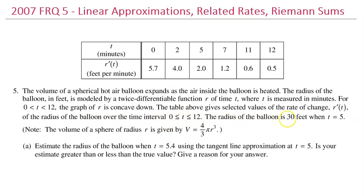The radius of the balloon is 30 feet when t equals 5. The volume of a sphere of radius r is given by v equals 4 thirds pi r cubed. Part A: Estimate the radius of the balloon when t equals 5.4 using the tangent line approximation at t equals 5. Is your estimate greater than or less than the true value? Give a reason for your answer.